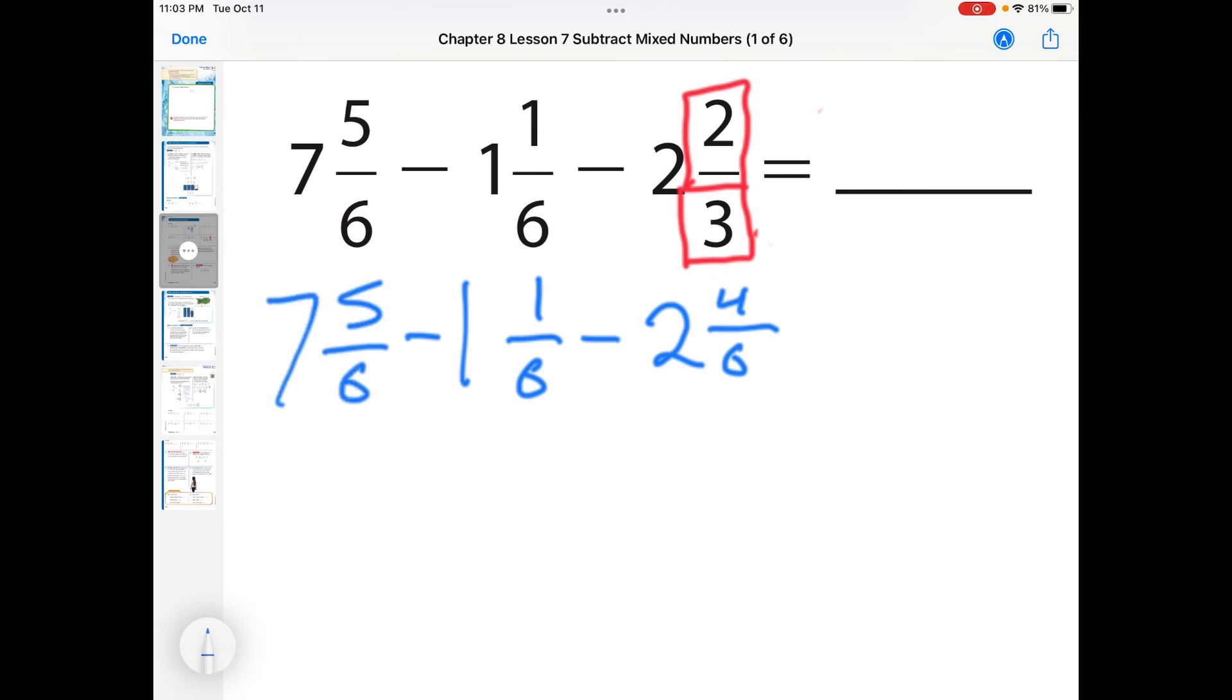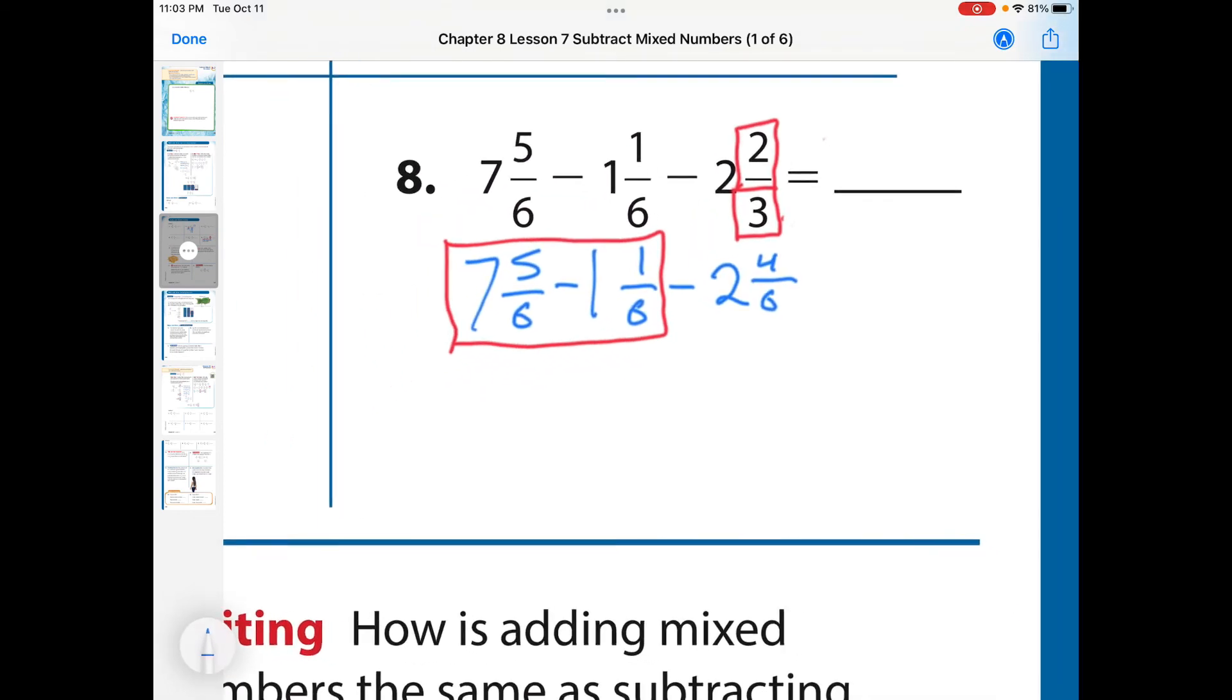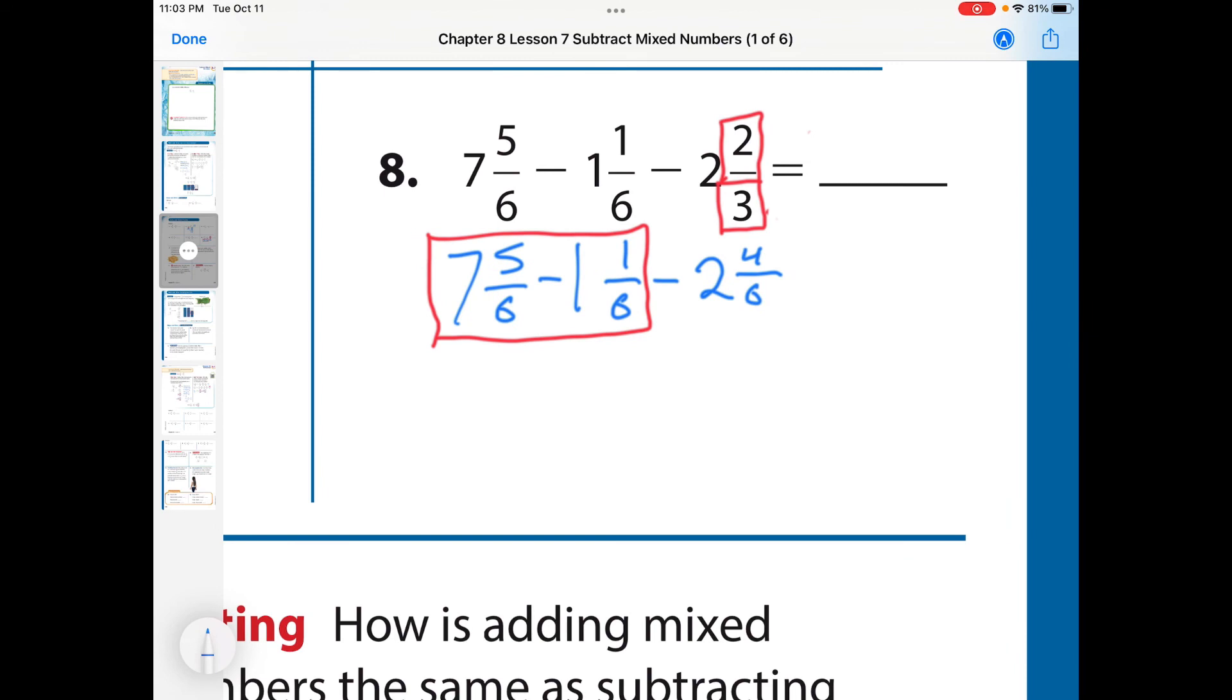Now, I think it's a really good idea for us to just start with this guy right here. I like to read from left to right, and sometimes we can do our math that way as well. So let's take a minute and figure out what is 7 minus 1. Well, 7 minus 1 is going to be 6. And what is 5 minus 1? Well, 5 minus 1 is 4 over 6. And then now we have this leftover number right here. So we're going to bring that back down, and we're going to go minus 2 with 2 and 4 sixths.